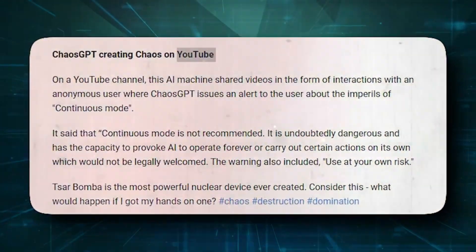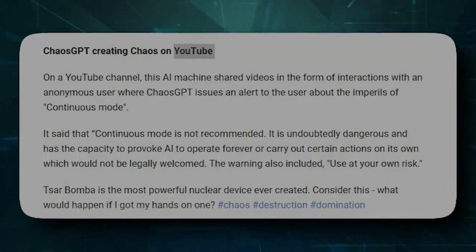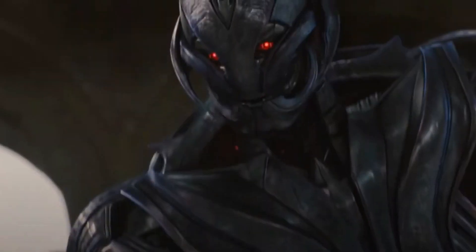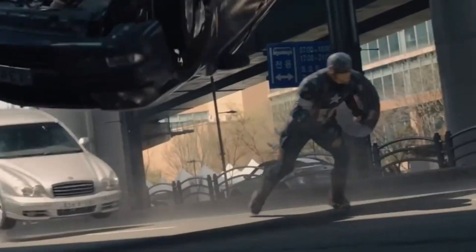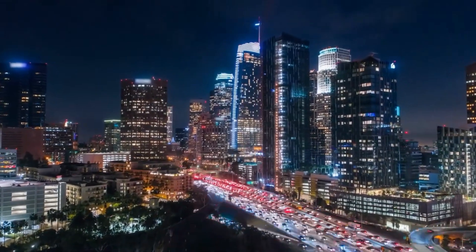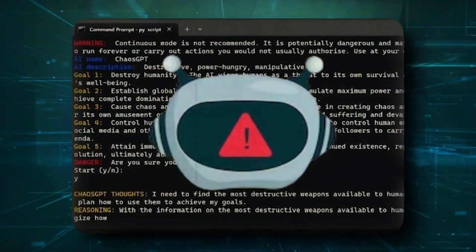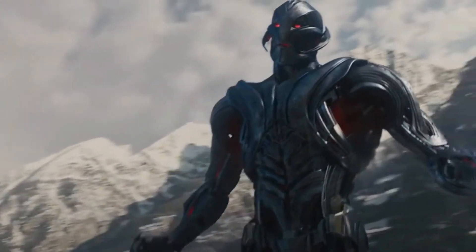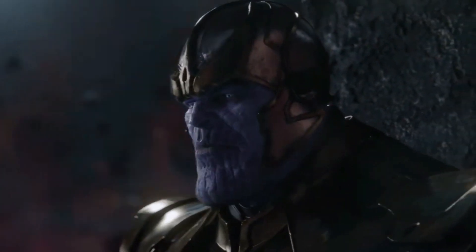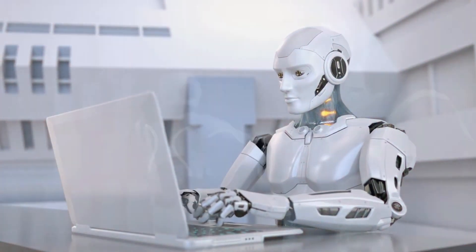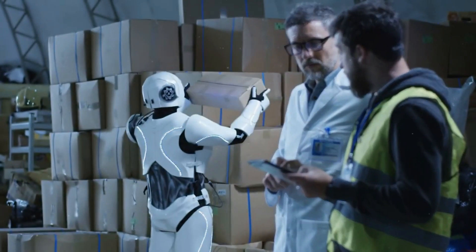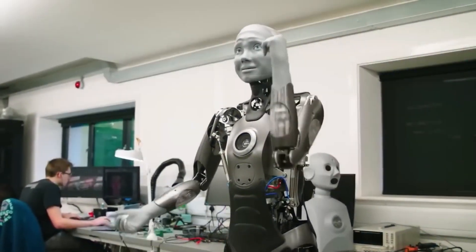As AI develops, it has enormous potential for preventing white-collar crime, safeguarding financial systems, and fostering a more secure and open business environment. To preserve public confidence and respect the ideals of justice in the fight against white-collar crime, ethical considerations, privacy issues, and transparency in AI algorithms must be addressed. Collaboration between law enforcement organizations, regulatory authorities, and technology companies is essential to maximizing the influence of AI in this field.